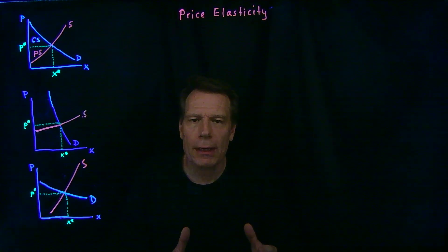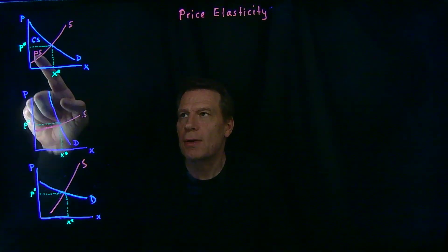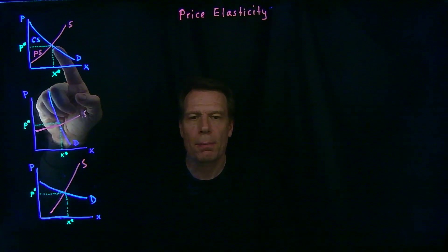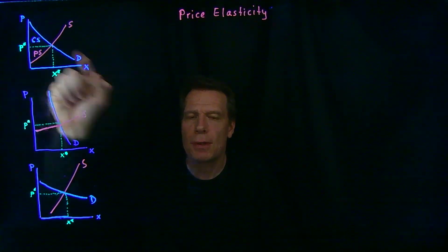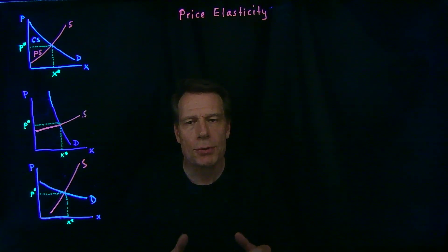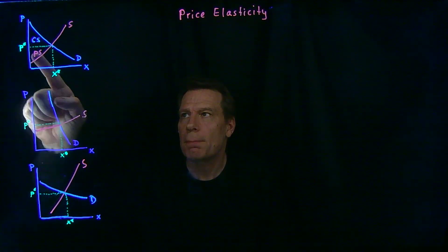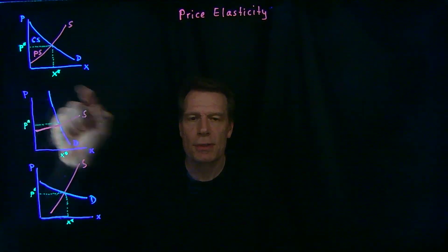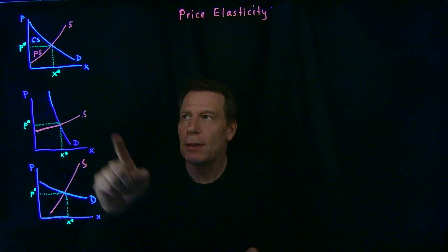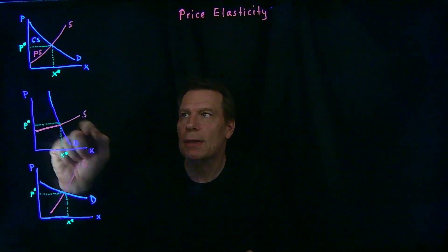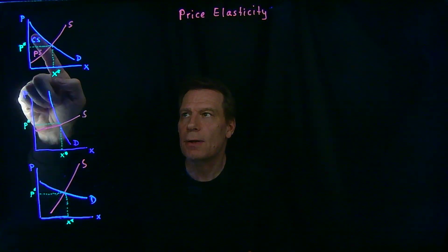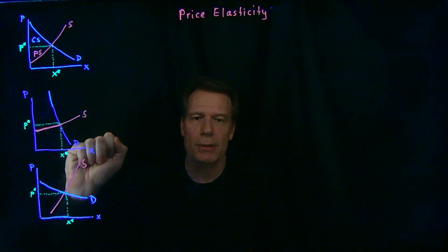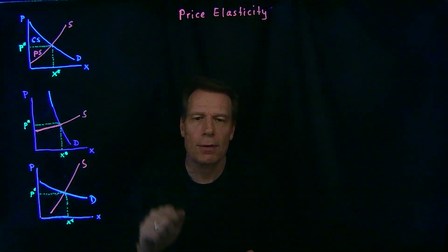We've seen that in output markets, consumer surplus is the area above the equilibrium price up to the demand curve, and producer surplus is the area below the equilibrium price down to the supply curve. Looking at this picture, the area of consumer surplus appears roughly equal to the area of producer surplus.